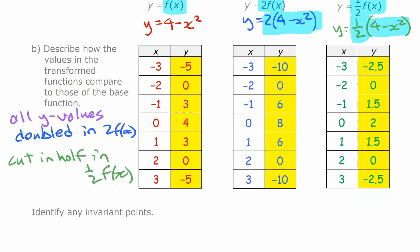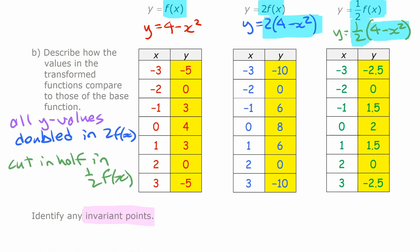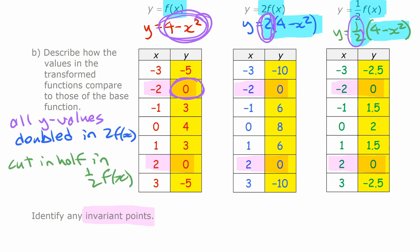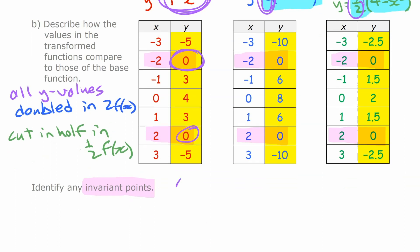Before we move on, we're going to look for invariant points — points that don't change in a transformation. Looking at the table, there are a couple of invariant points. It makes sense why those don't change: if you're going to multiply y values by 2 or by one-half and the y value is 0, multiplying 0 by anything still gives 0. So the invariant points are negative 2, 0 and 2, 0 — where y equals 0.